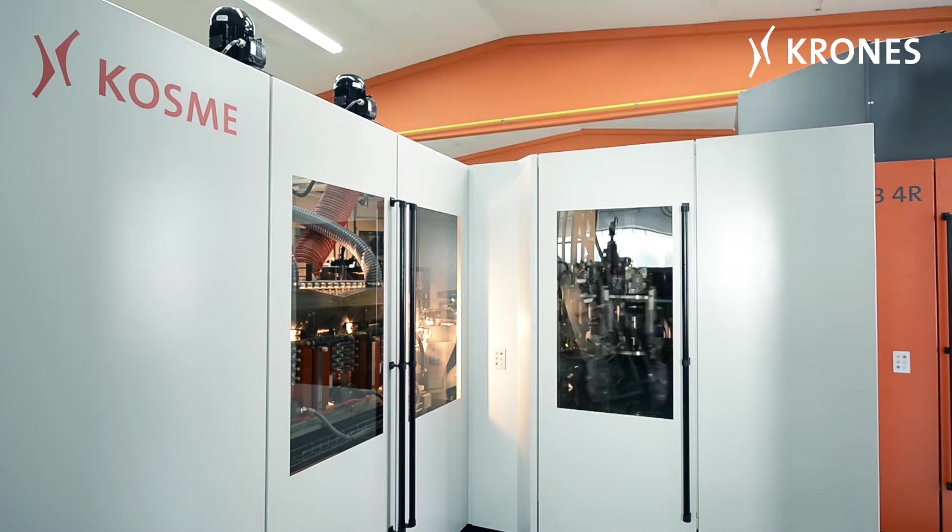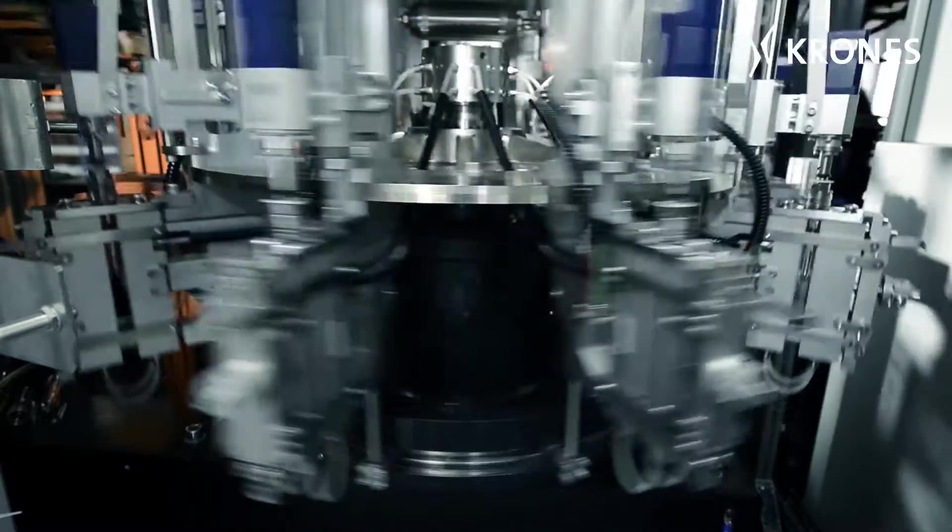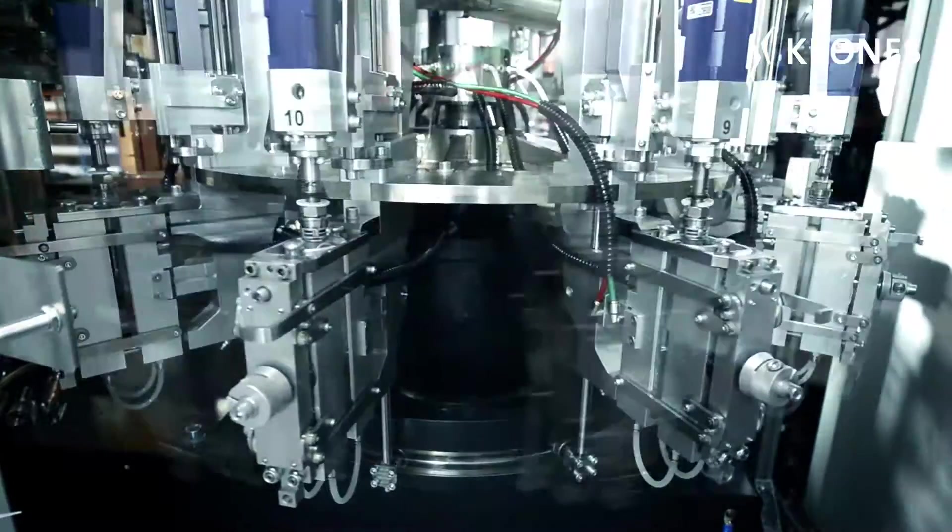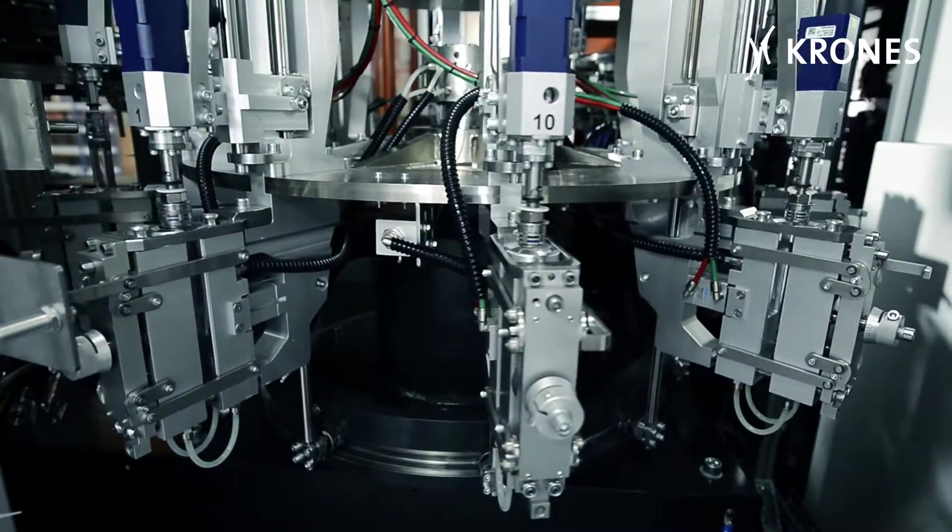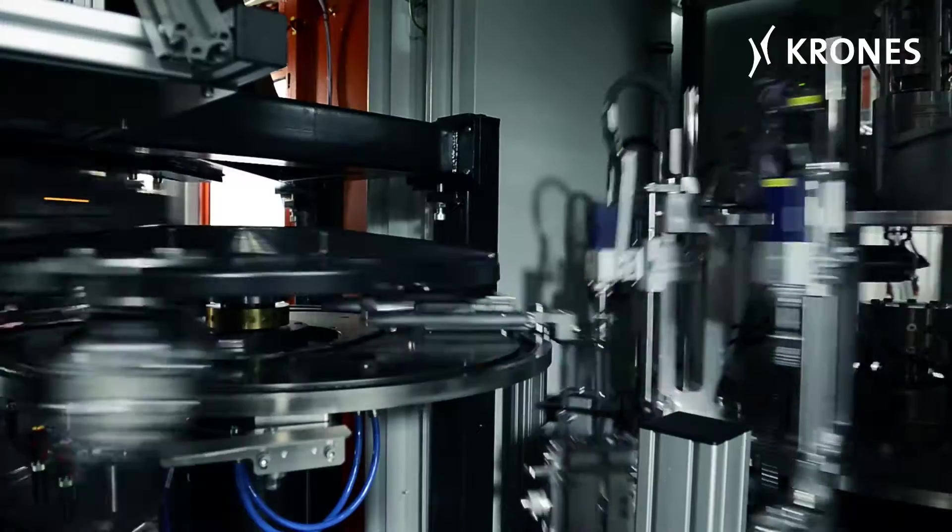Water-cooled aluminum plates reduce the preform temperature selectively at specified points. This means the preform receives an individualized temperature profile, precisely matched to the blow molding process and the subsequent bottle shape involved.